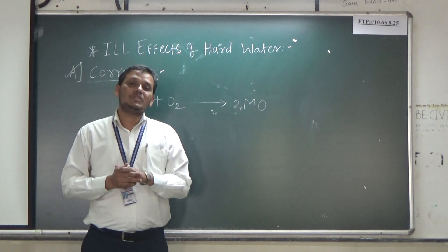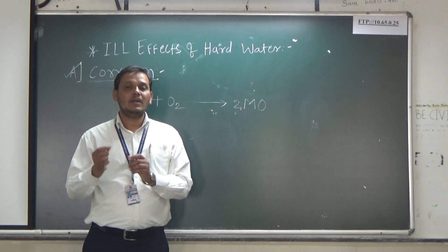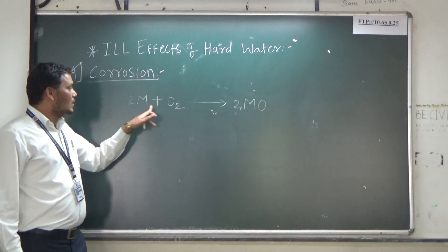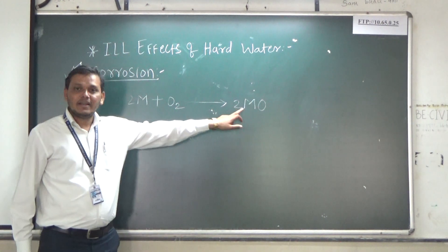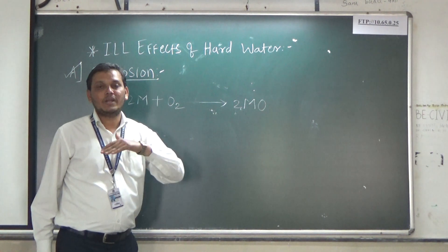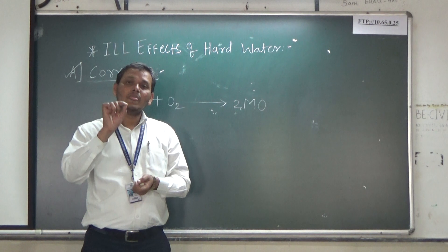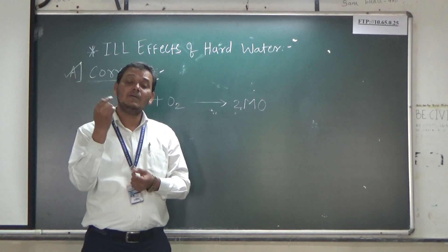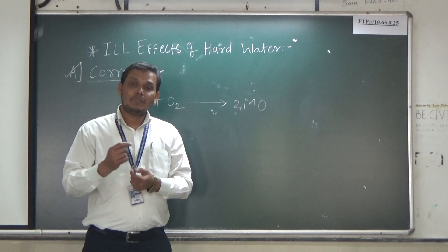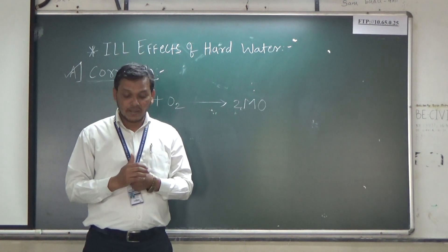Boiler metal is made up of mild steel, which also contains iron and trace quantities of manganese. When metal comes in contact with oxygen, there is formation of a metal oxide film — this is the corroded portion. If corrosion takes place, it results in formation of small pores and small holes at the inner surface of the boiler, leakage of joints, and decreased efficiency of the boiler.